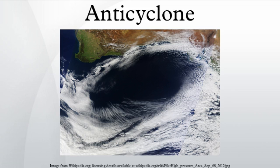Depiction on weather maps: On weather maps, high-pressure centers are associated with the letter H in English, or A in Spanish, within the isobar with the highest pressure value. On constant-pressure upper-level charts, anticyclones are located within the highest-height-line contour.